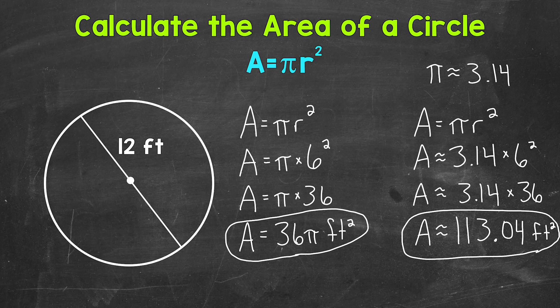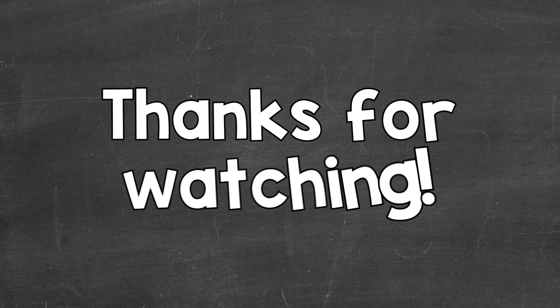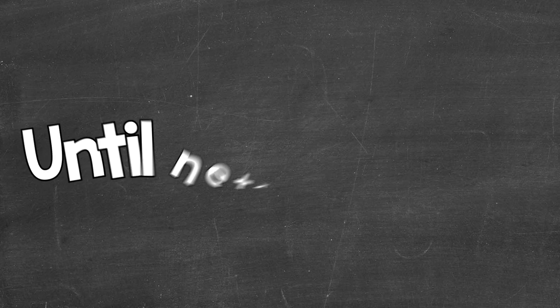So there you have it — that's how you calculate the area of a circle. Use the formula area equals pi r squared, plug in your radius and square it, then write out your area either in terms of pi or use an approximate version of pi to get an approximate area in decimal form. I hope that helped. Thanks so much for watching. Until next time, peace.